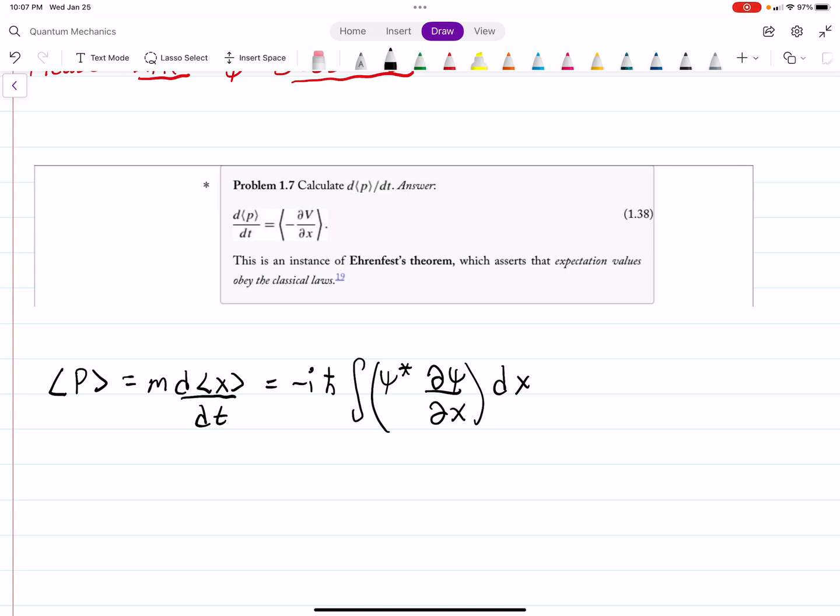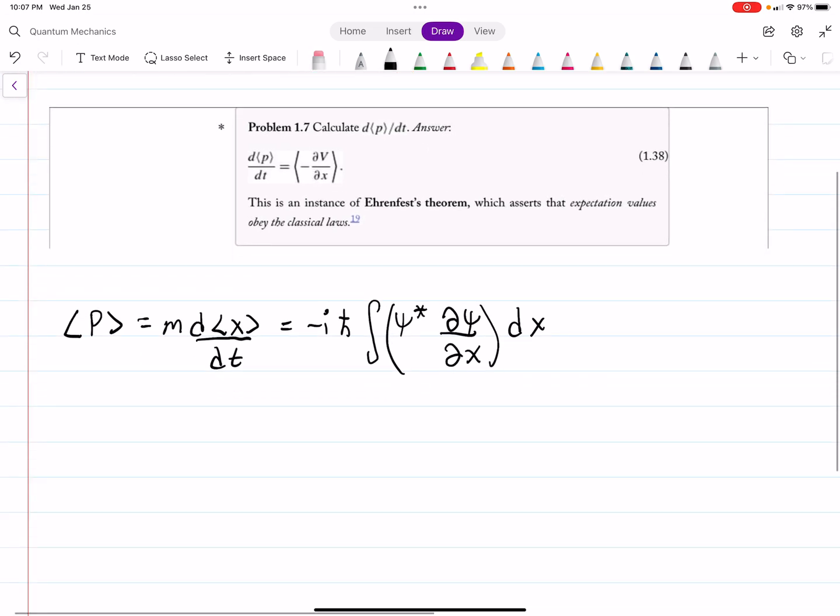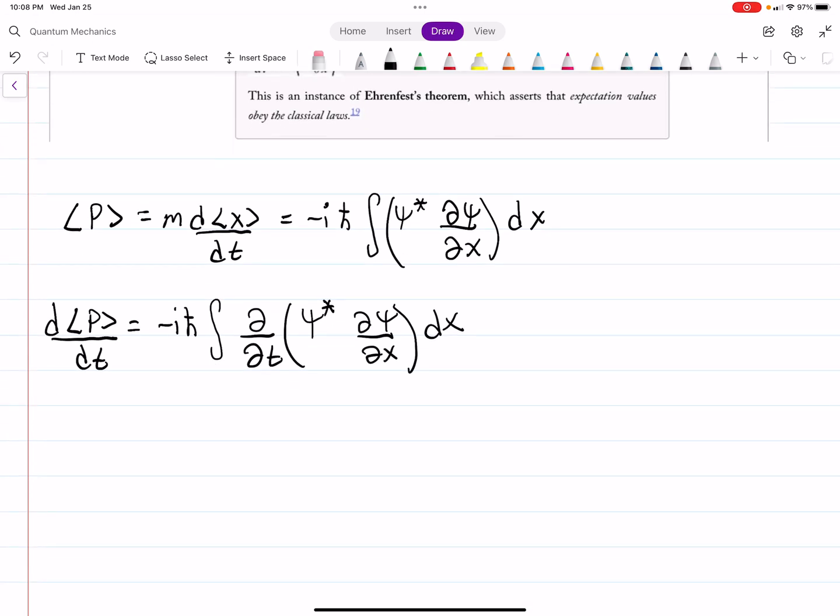So we want to take a time derivative of this, so d expectation value of p dt is minus i h-bar, those are constants, and I'm going to put the derivative inside our integral, so now these are going to be partial time derivatives since it's inside the integral.